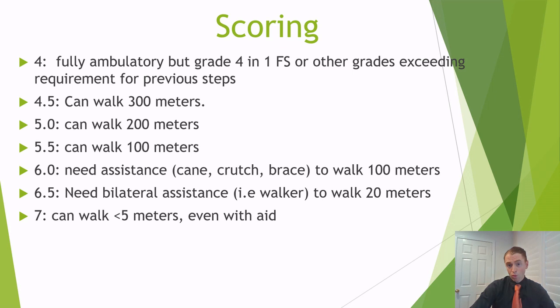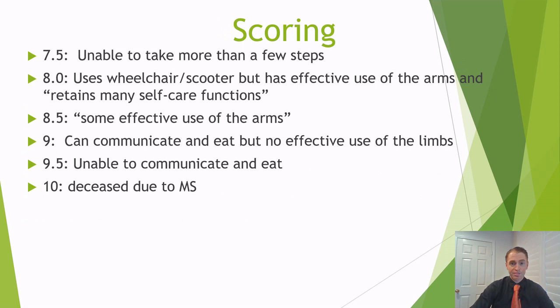EDSS 4 would be grade 4 in one functional system. EDSS 4.5 means you can walk 300 meters but not 500 meters. EDSS 5 means you can only walk 200 meters. EDSS 5.5 means you can walk 100 meters. At EDSS 6, you need assistance to walk 100 meters. At 6.5, you need bilateral assistance such as a walker or two sticks just to walk 20 meters. At EDSS 7, you can't walk greater than 5 meters even with assistance. At 7.5, you can only take a few steps. At 8.0, you need a wheelchair but have effective use of the arms. At 8.5, you have some effective use of the arms. At EDSS 9, you can communicate and eat but can't effectively use the limbs. At 9.5, you can't communicate or eat. And 10 is deceased due to multiple sclerosis.